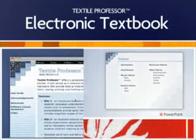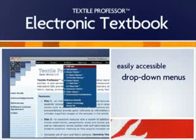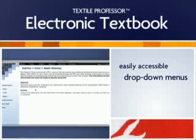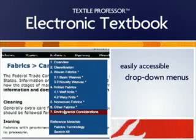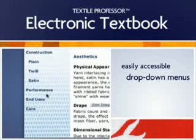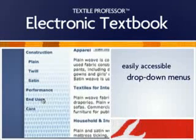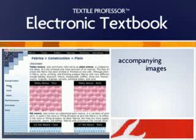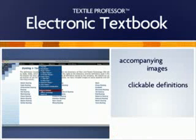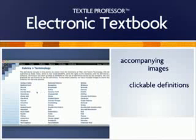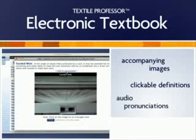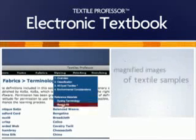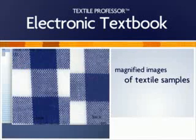Drop-down menus provide quick reference to additional information on production, properties, environmental considerations, performance, and use and care of textiles, along with a wide array of accompanying images, clickable classifications, and definitions of terminology, including audio pronunciations — plus magnified images of samples from the Textile Professor Swatch Kit.